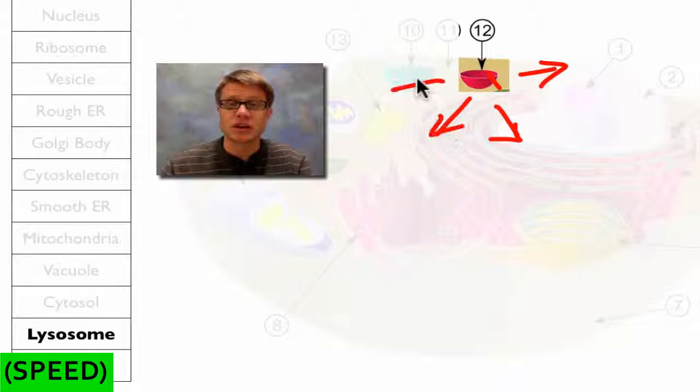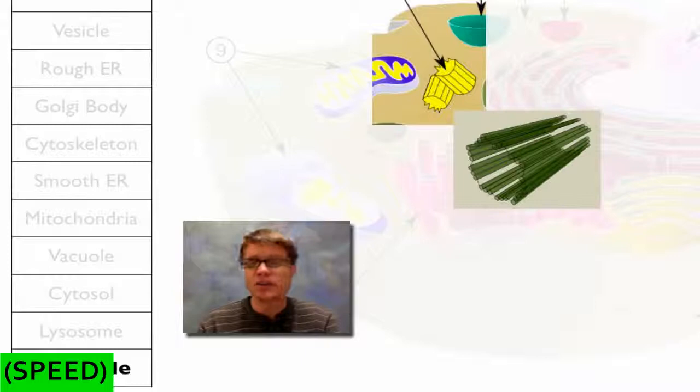Or where it gets its name from is if we were to pop this lysosome, basically what happens is those digestive enzymes will go throughout the cell and will kill the cell, dissolve the cell. And so the process of apoptosis where the cell kills itself is a product of lysosomes.